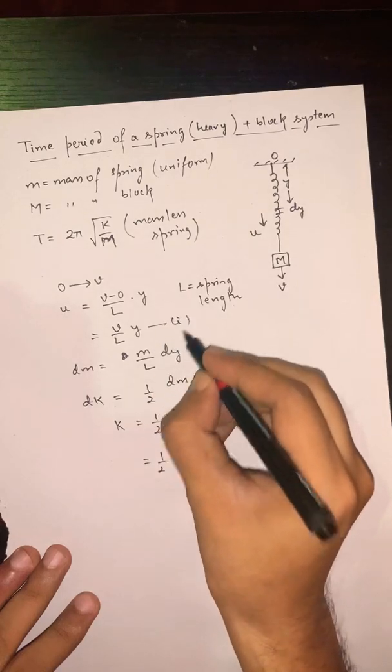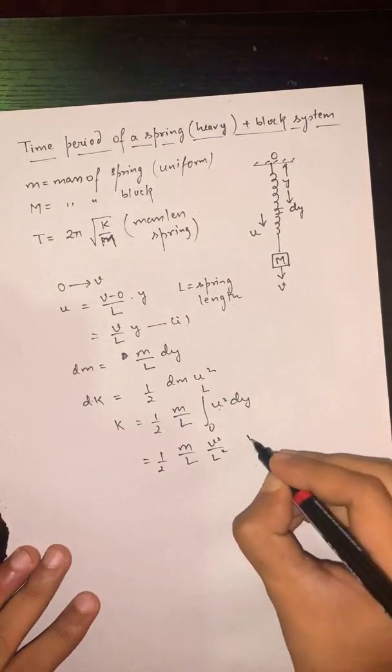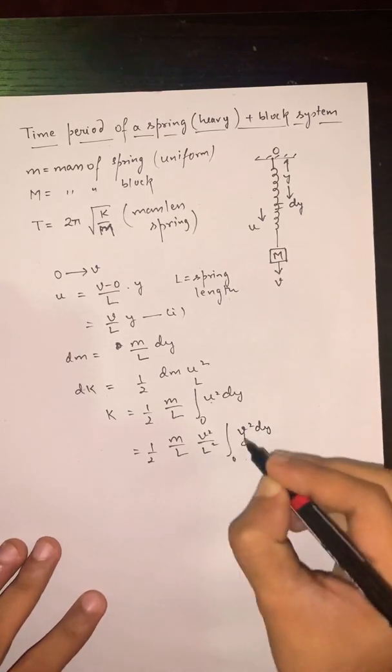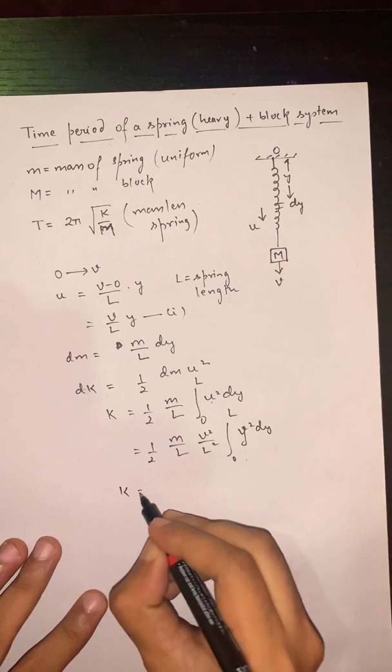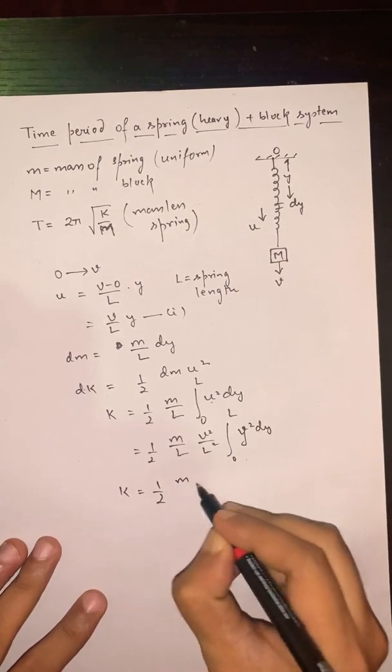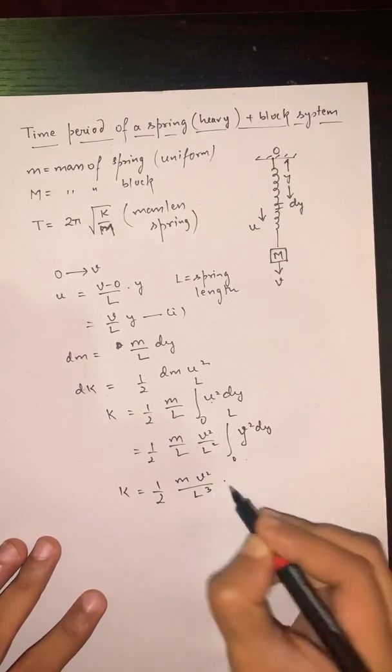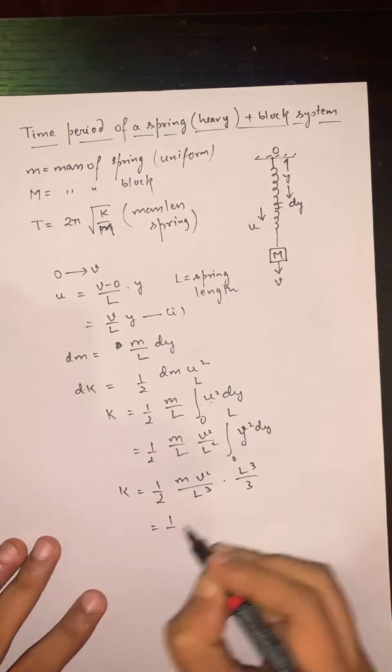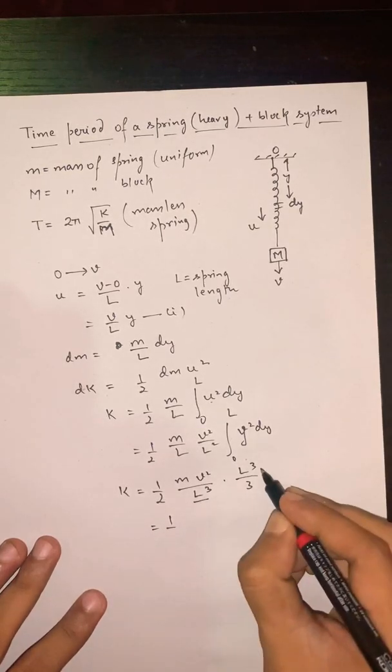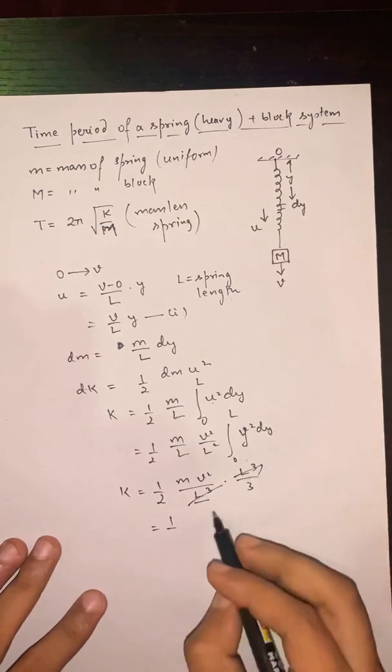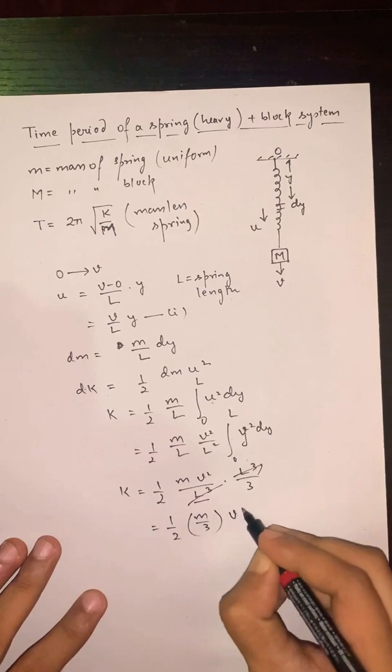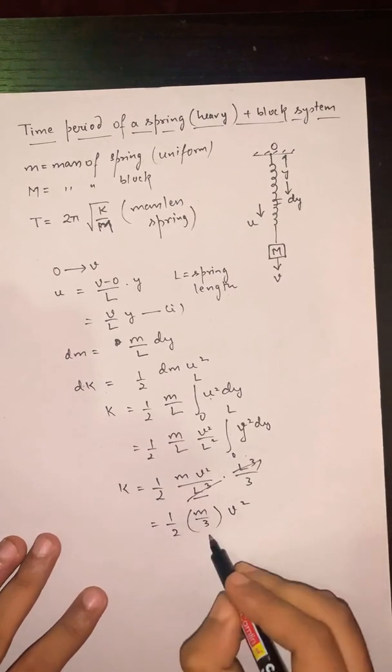It becomes ½(mV²/L³) ∫y² dy from 0 to L, which equals ½(mV²/L³) × L³/3. As you can see, L³ cancels out, so the final result becomes (m/6)V².